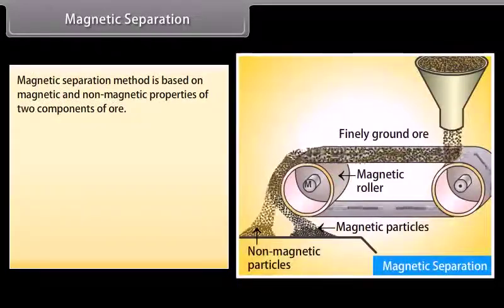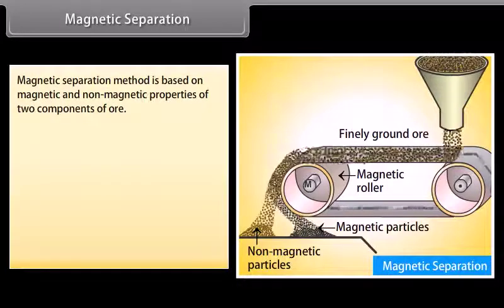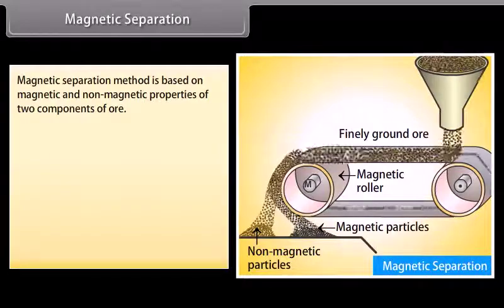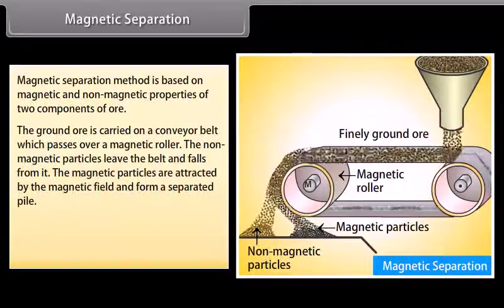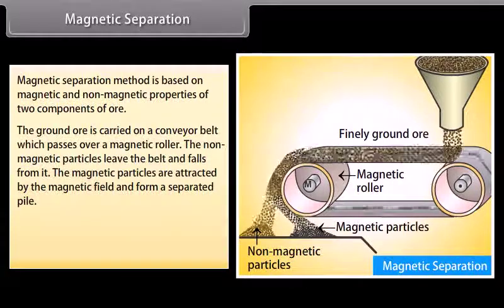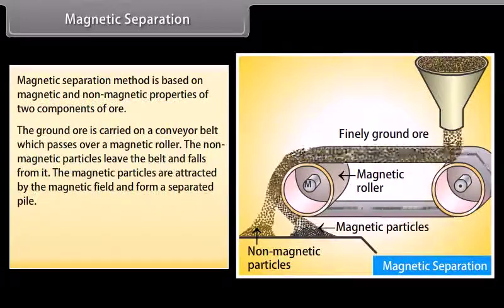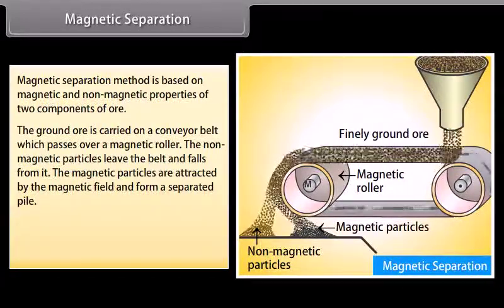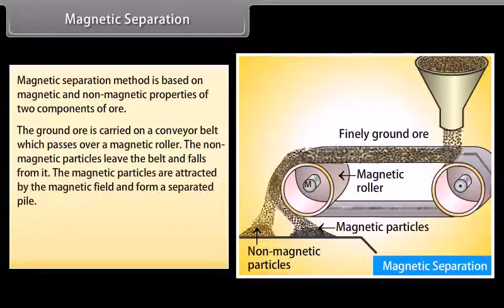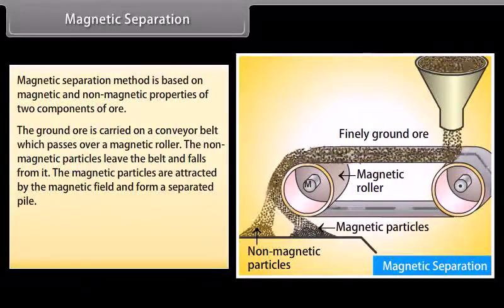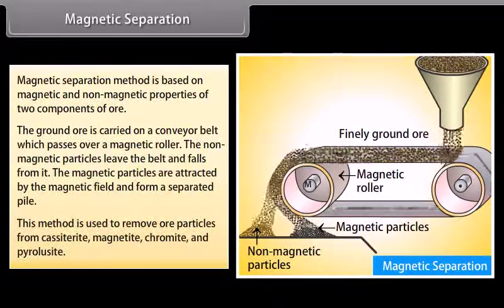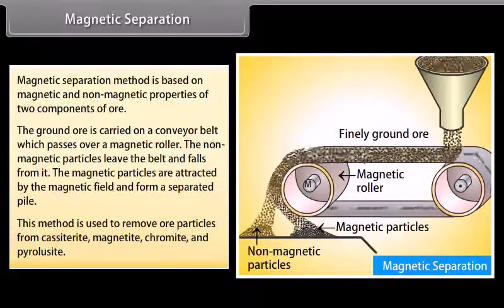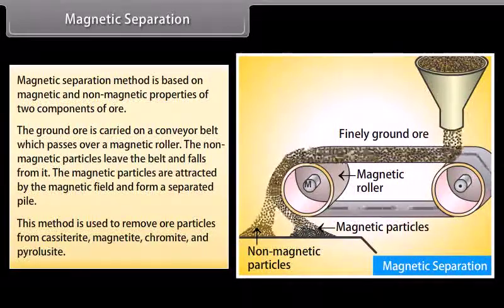Magnetic separation. Magnetic separation method is based on magnetic and non-magnetic properties of two components. The ground ore is carried on a conveyor belt which passes over a magnetic roller. The non-magnetic particles leave the belt and fall off from it. The magnetic particles are attracted by the magnetic field and form a separated pile. This method is used to remove ore particles from cassiterite, magnetite, chromite and pyrolusite.